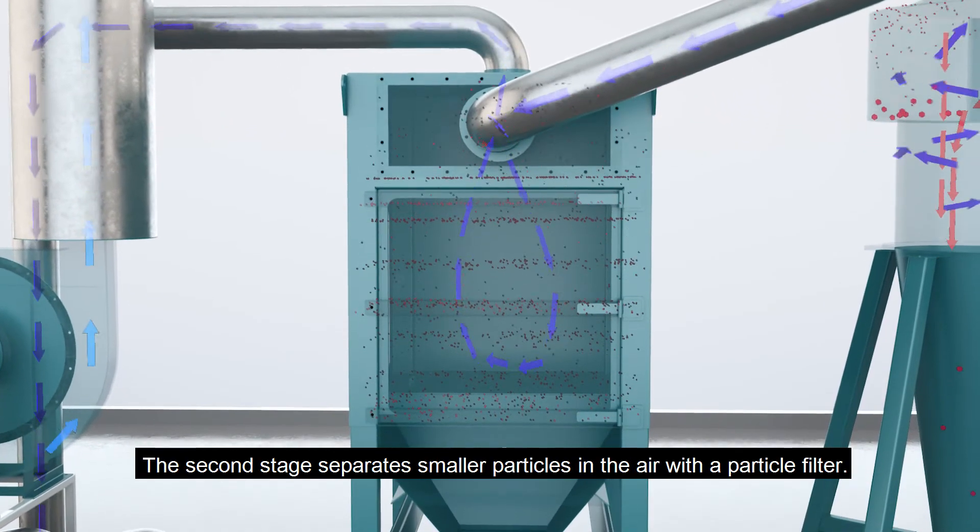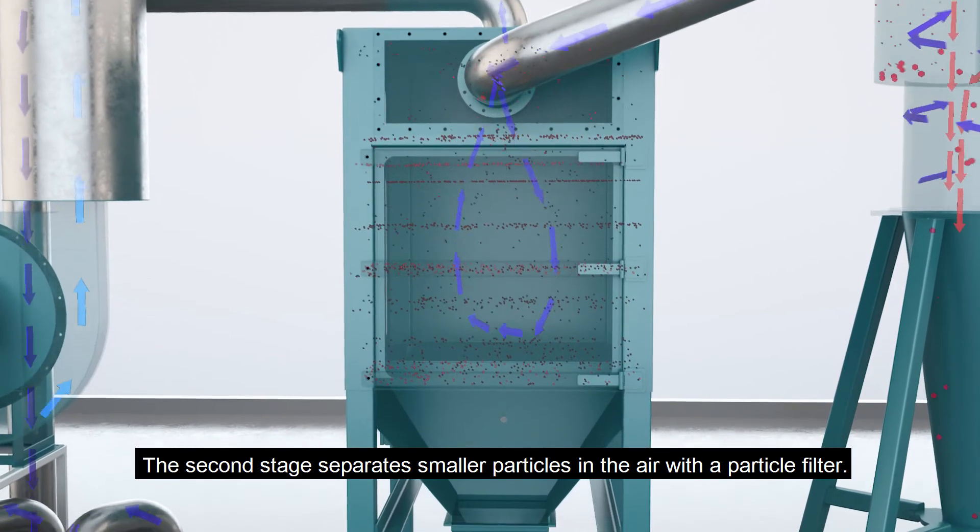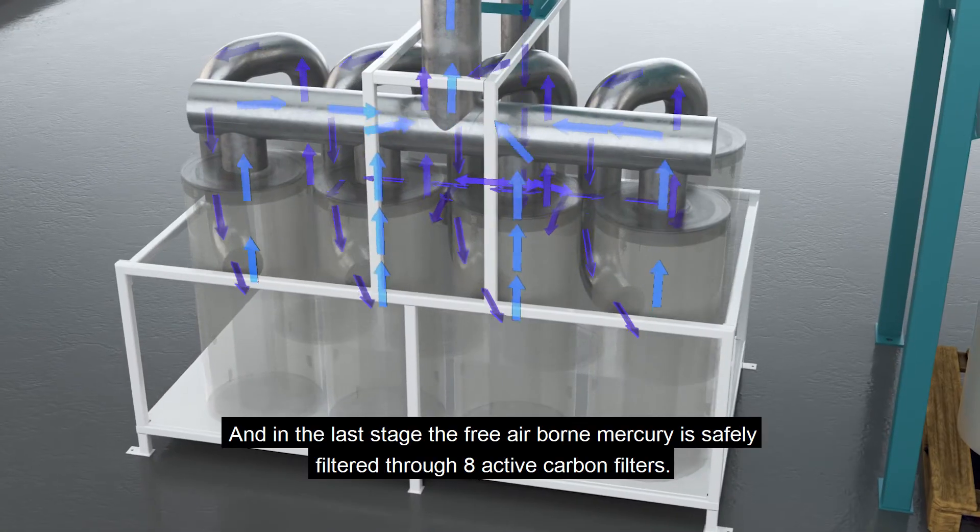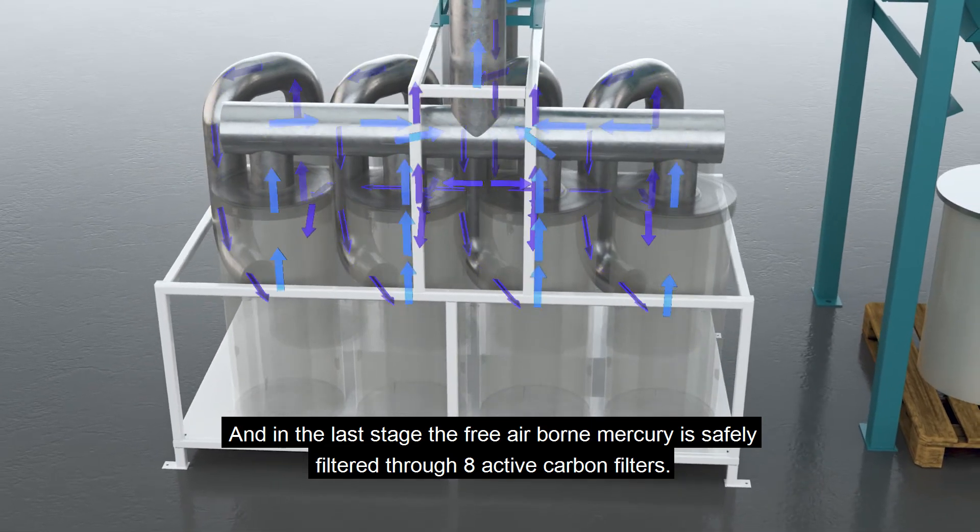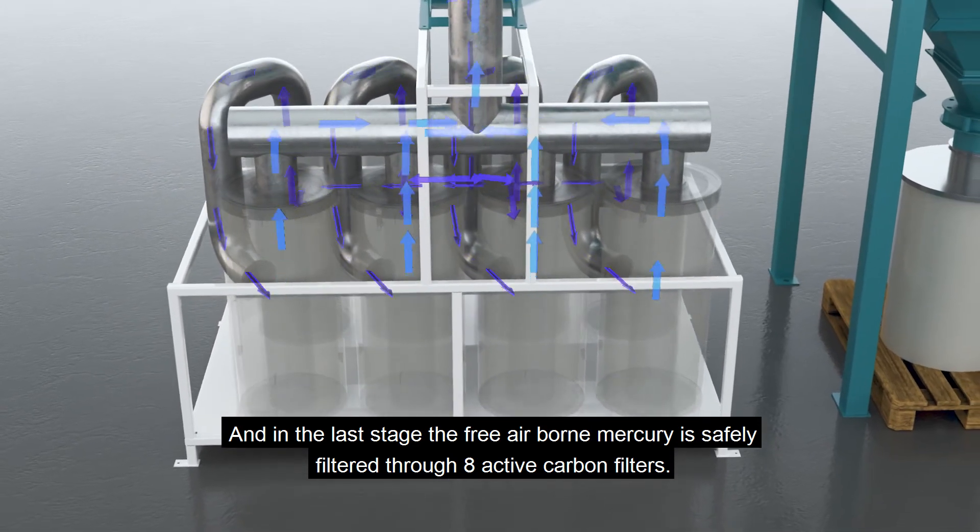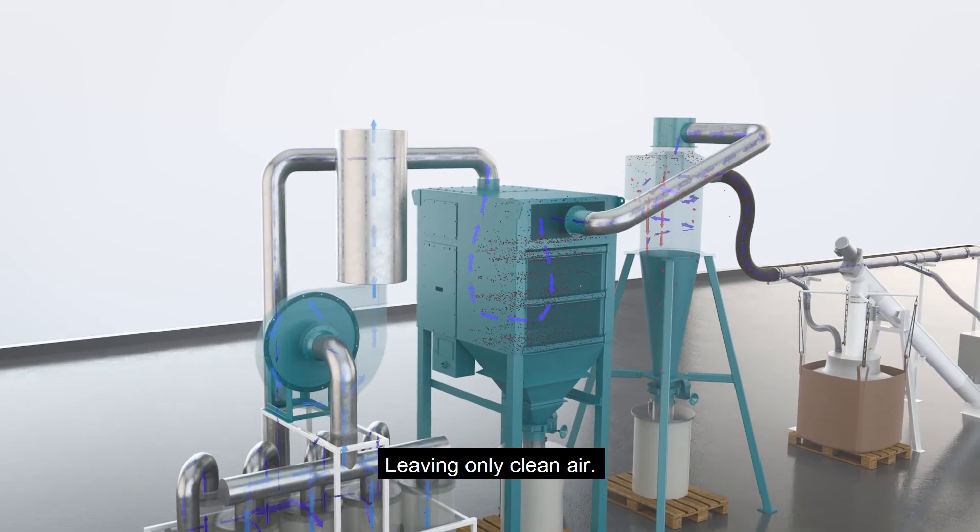The second stage separates smaller particles in the air with a particle filter. And in the last stage, the free airborne mercury is safely filtered through eight active carbon filters, leaving only clean air.